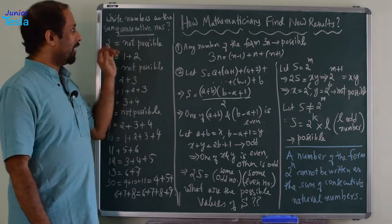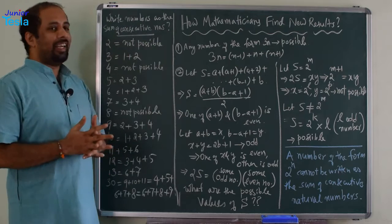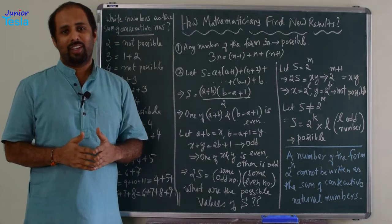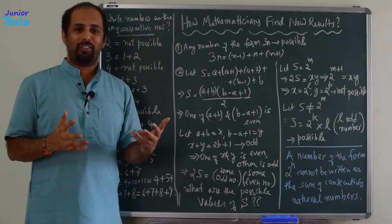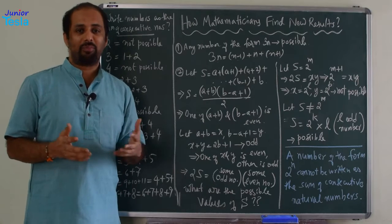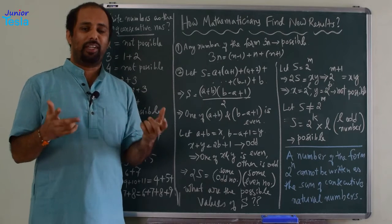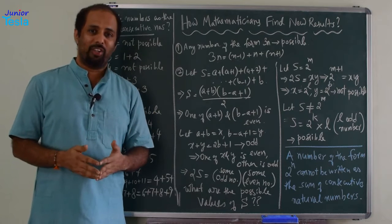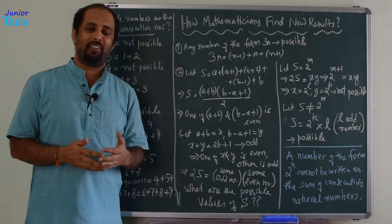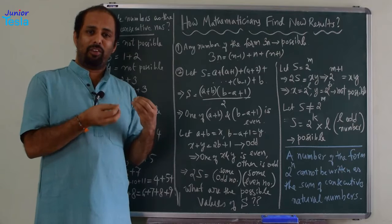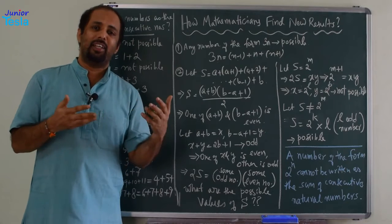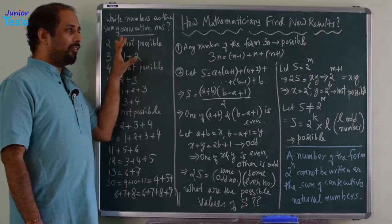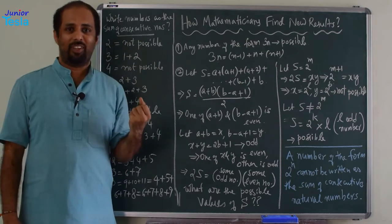For that, I have taken one small example — writing numbers as the sum of consecutive natural numbers. As kids, we always do these kind of fun games. We have some number and we try to split it as sum of 2 or 3 numbers. For example, 3, I write 1 plus 2. 5, I write 2 plus 3. Like that, every number we try to write as sum of 2 or 3 natural numbers. Now, let us see what happens if I take this exercise seriously.